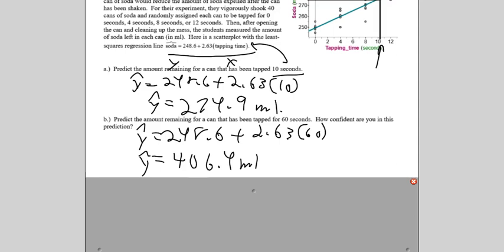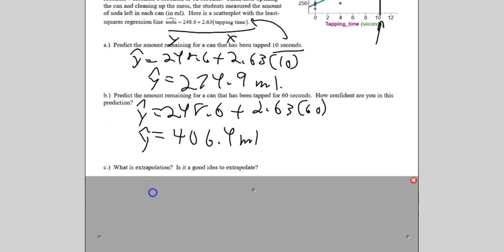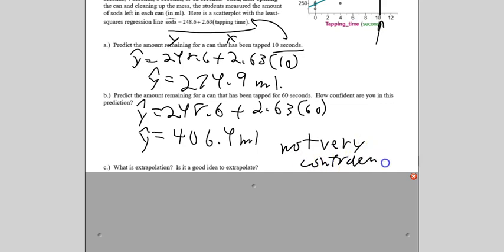The other thing is, think about how far. Look at this graph up here. Going from 0 to 12 seconds. And think about how far out to the right 60 seconds would be in comparison to that. That's way far out. And that means it's going to be way high up there. So, 406, it's too far away to be an accurate prediction. And secondly, there may not even be that much of a can. So, you're not going to like suddenly have more appear than you started with. So, when you ask how confident are you, we're going to say not very confident.